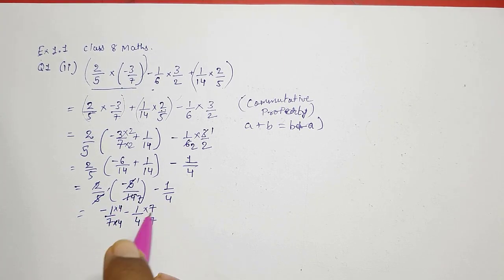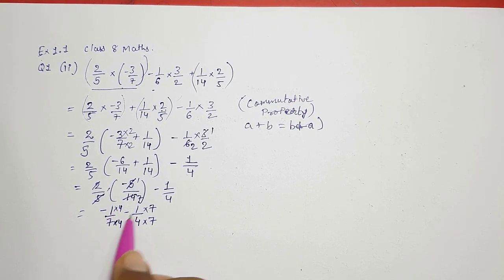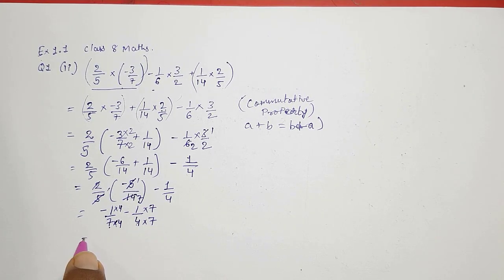Now we need to take out LCM. LCM will be 28 only, into 4 into 4 into 7 into 7. Your basics should be clear that whenever you want to add or subtract any rational numbers your denominator should be same and that you can do by taking LCM. So here you can see minus 4 by 28 minus 7 by 28.